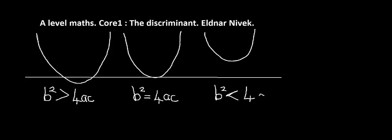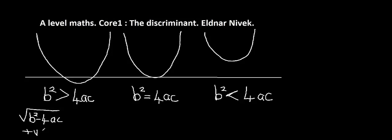So b squared minus 4ac is known as the discriminant. We need to look at why that happens. If b squared is greater than 4ac, then the discriminant, b squared minus 4ac, will be positive. And that means we'll get two solutions — a positive and a negative root.